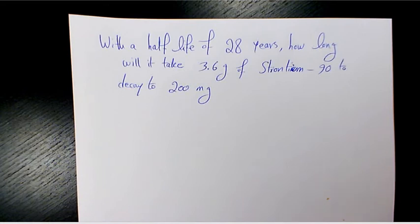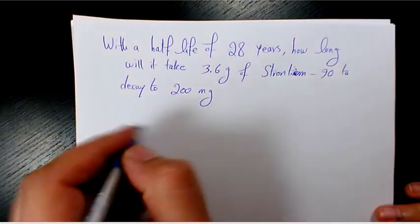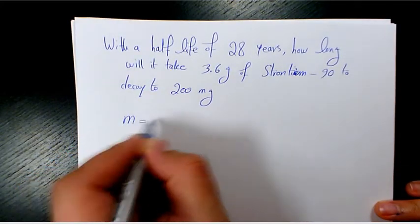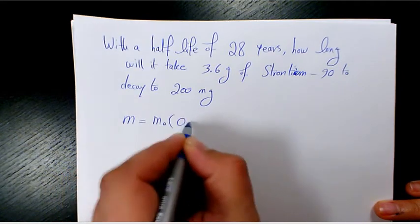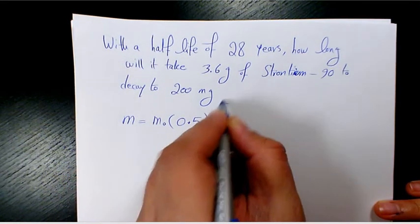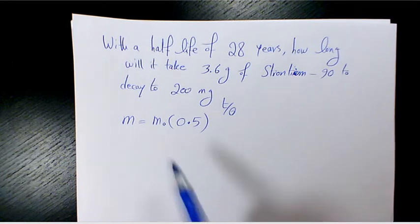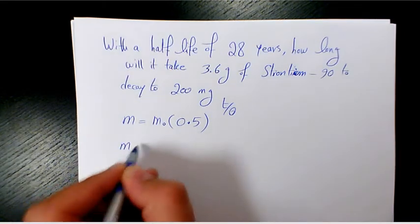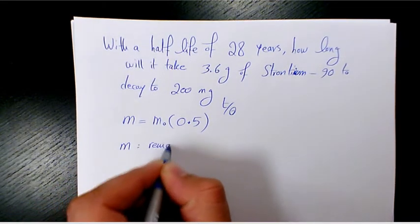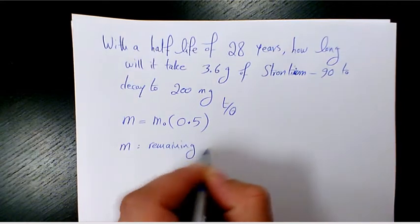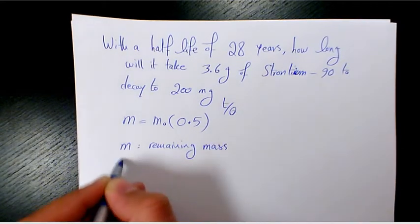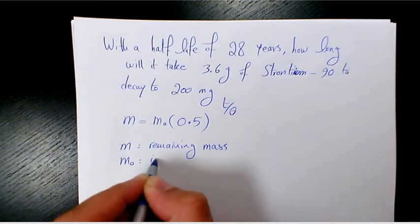So I write the formula first: M equals M₀(0.5) to the power of T over θ. M is the remaining mass, M₀ is the initial or original mass before decay.